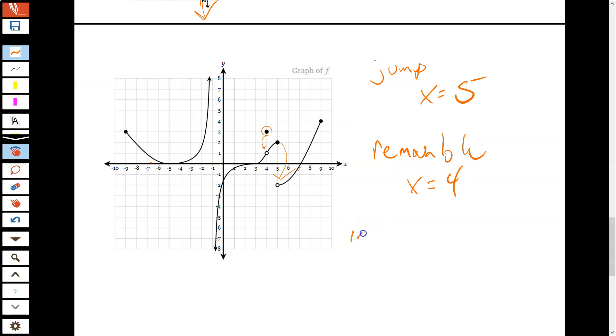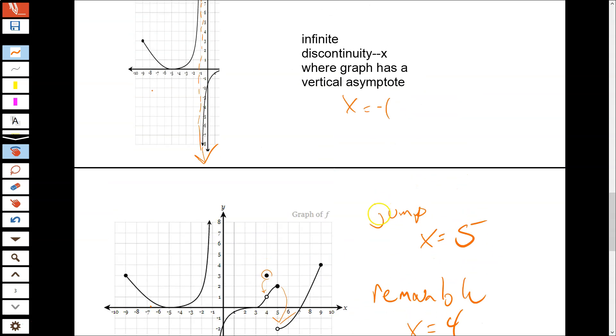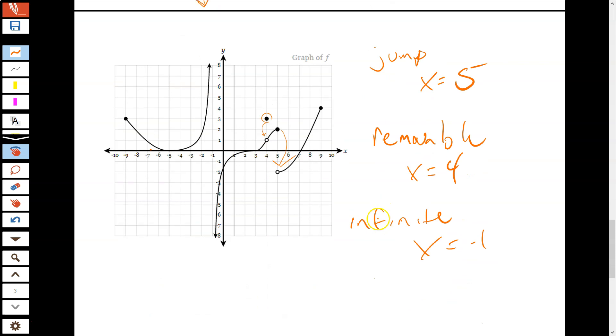And I could ask you for an infinite discontinuity. And that would be at our vertical asymptote we just saw as x equals negative 1 up here, right?